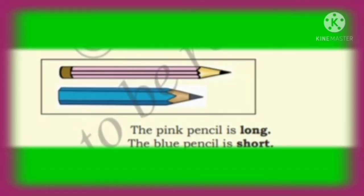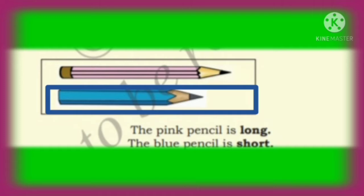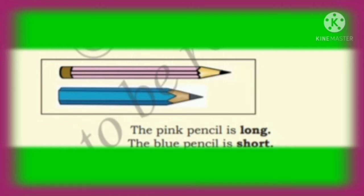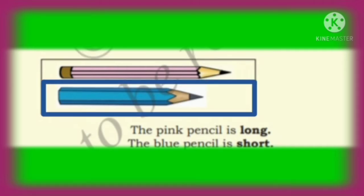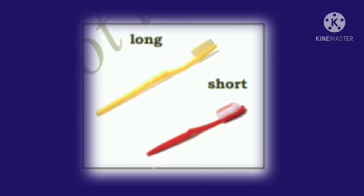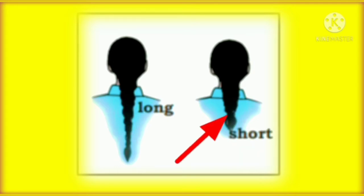Children, observe the picture. Here we have two pencils. The pink pencil is long and the blue pencil is short. We have two more pencils: one pencil is long and the red pencil is short. Next, observe this picture. On comparing these two girls' hair, the first girl's hair is long and the second girl's hair is short.